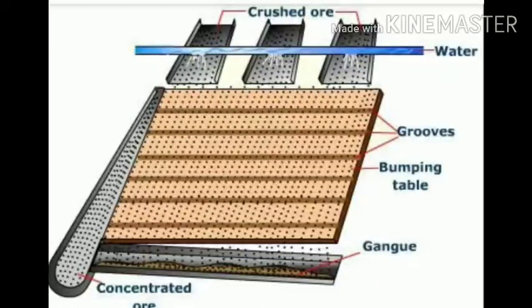The next method is gravity separation, also called the levigation method. In this method, lighter impurity particles are separated from heavier ore particles by using a strong water jet or hydraulic washing. In Wilfley Mills, a strong water jet is used, and the impurities, being lighter in nature, are washed away.